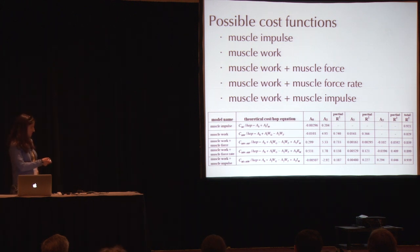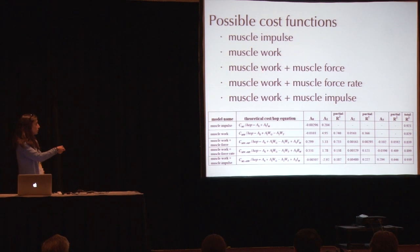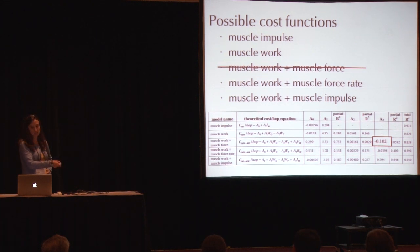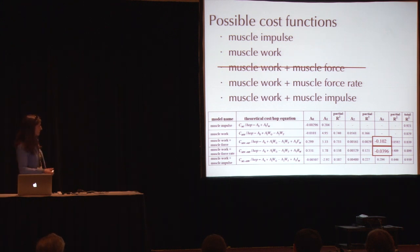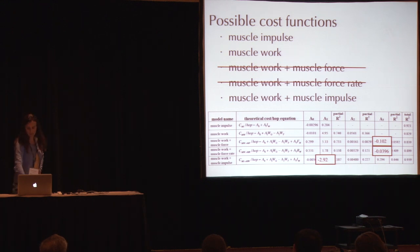What if we combine some of these different sources of metabolic cost? Possible combinations include muscle work plus muscle force, muscle work plus muscle force rate, or muscle work plus muscle impulse. In the case of muscle work plus muscle force, we can cross that off the list because we get a negative correlation — metabolic cost decreasing with increasing muscle force — which is opposite to what you'd expect physiologically. Similarly, muscle work plus muscle force rate yields a negative correlation, also non-physiological. And muscle work plus muscle impulse also produces a non-physiological negative correlation with muscle work, so we cross that out too.